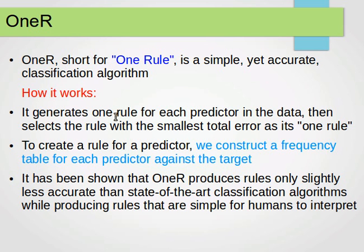It generates one rule for each predictor in the data, then selects the rule with the smallest total error as its one rule. So from our predictors or features, we generate one rule for each of them and choose the one that gives us the smallest total error.